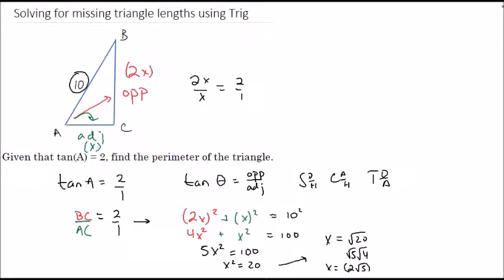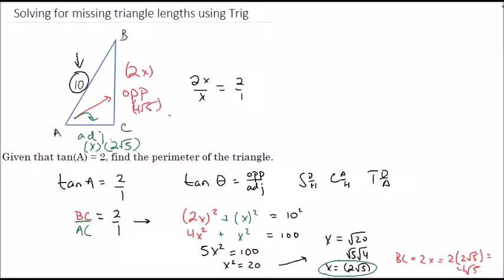Now we know that side BC, which is 2x, equals 2 times 2√5, which is 4√5. Side AC is just x = 2√5. So our triangle has side lengths of 10, 2√5, and 4√5. The perimeter is the sum of the sides: 10 + 2√5 + 4√5.